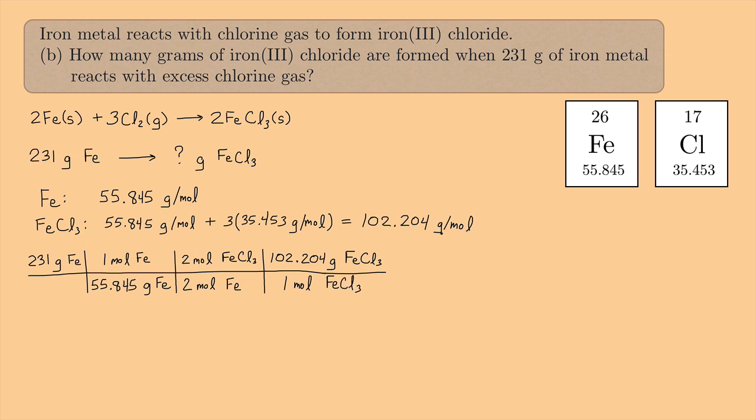And that just comes from this. Now I think we're ready to cancel. So let's see what we have. Grams of iron cancels with grams of iron. Moles of iron cancels with moles of iron. Moles of iron(III) chloride cancels with moles of iron(III) chloride. And I'm left with grams of iron(III) chloride. That's what I want.